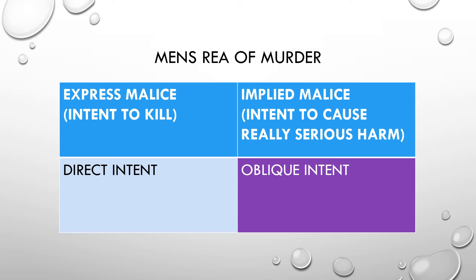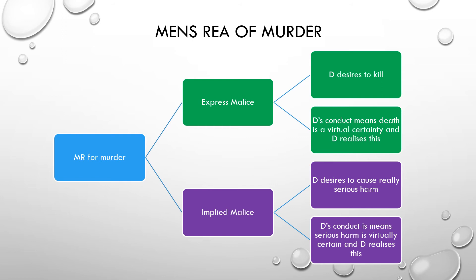Don't forget to use cases to support your analysis. If it's direct intent, consider whether killing or causing serious harm was the main aim, objective, and desire. If it's oblique intent, apply the Nedrick test: was it virtually certain that the defendant's actions would cause death or serious harm? And did the defendant realise this? There is an objective and a subjective element. Once solidified, write a sentence stating whether there is direct or oblique intent and apply it well.